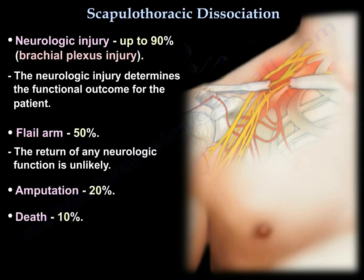Neurological injury occurs in up to 90% of cases. The neurologic injury determines the functional outcome for the patient. 50% have a flail arm, and return of any neurologic function is unlikely. 20% require amputation, and 10% result in death.